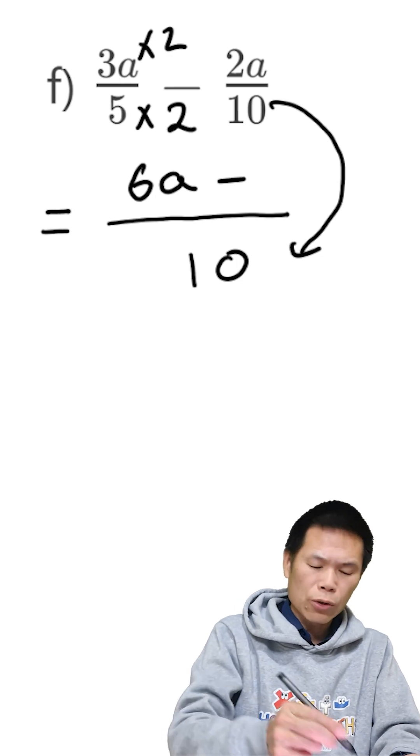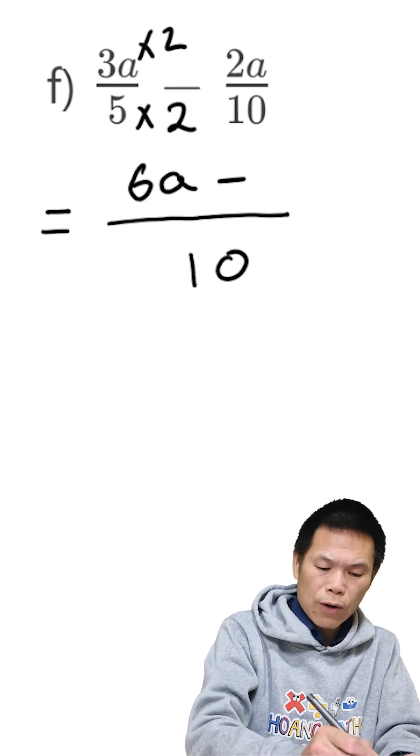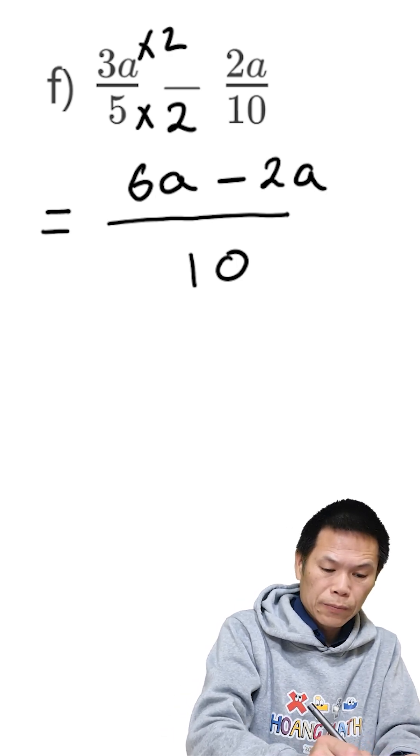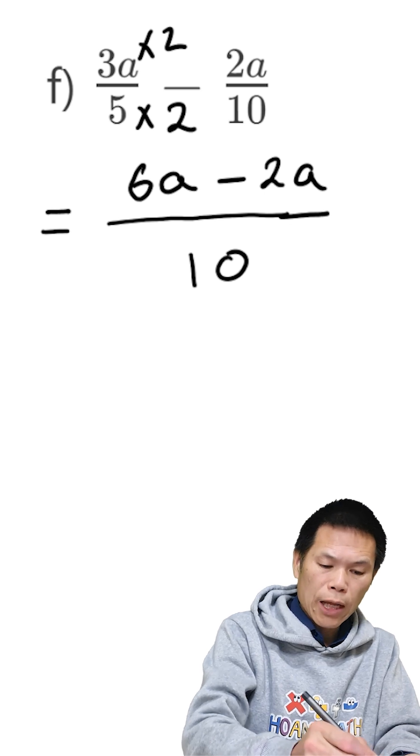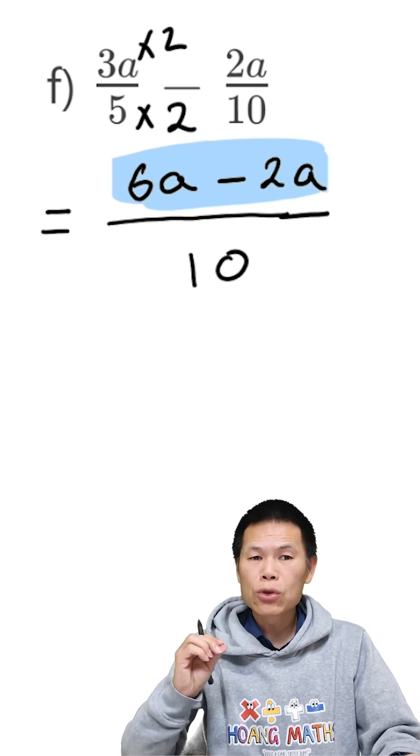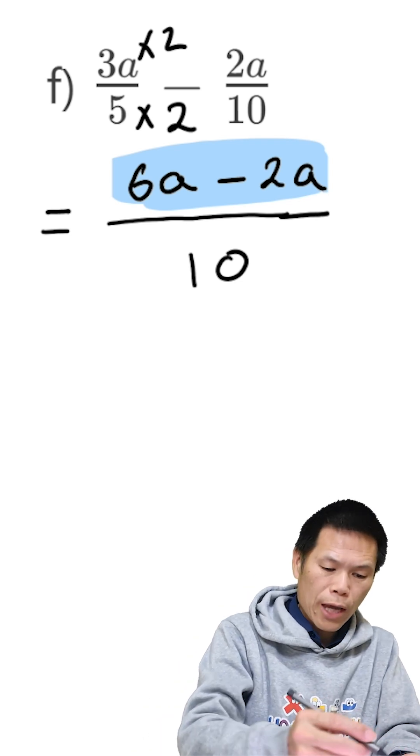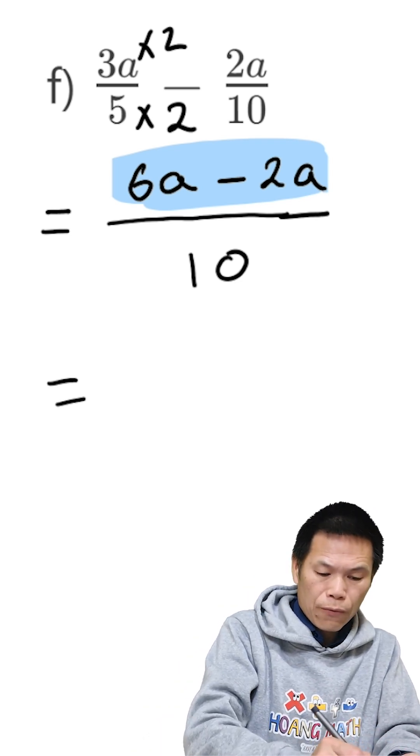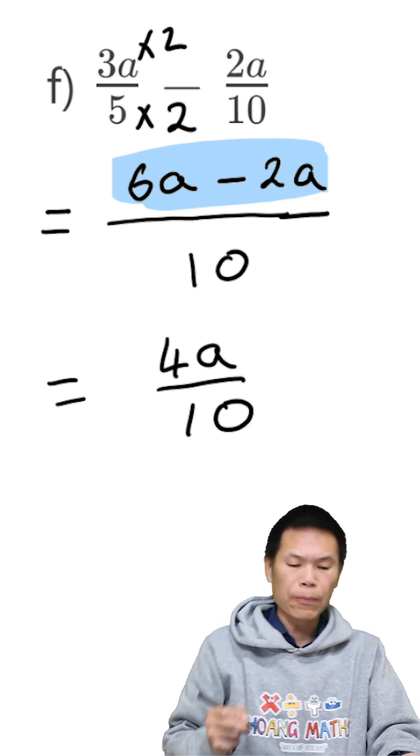This is times by 1, so we just write 2a down. Now we collect the like terms: 6a minus 2a, 6 minus 2 gives me 4, so the answer is 4a over 10.